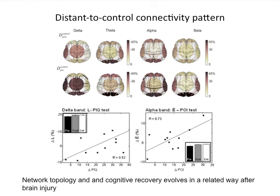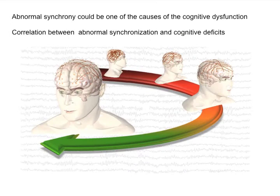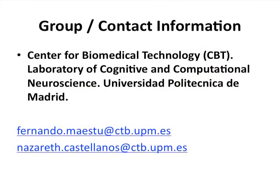We see that these functional connectivity patterns recover after the neurorehabilitation treatment. More interestingly, the recovery of this topology evolves in parallel with cognitive recovery. That means those persons who improve more in neuropsychological tests gain more connectivity and restore the topology of control patterns. The principal finding in both the brain injury project and in Alzheimer's disease is that abnormal synchrony could be one of the causes of cognitive dysfunction, and it is important to correlate changes at the topological level with observed cognitive deficits.